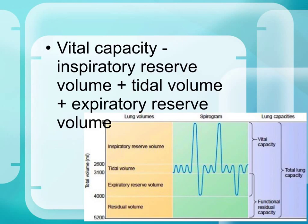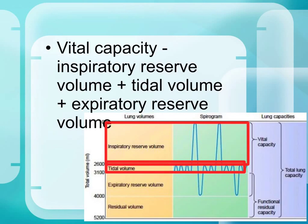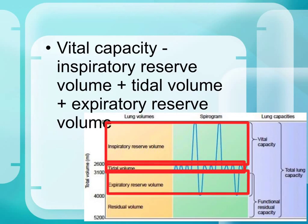Vital capacity is the addition of inspiratory reserve volume, tidal volume, and expiratory reserve volume. So it is the maximum amount of air that can be breathed in and the maximum air that can be breathed out — all of the air that is moving in and out is the vital capacity.